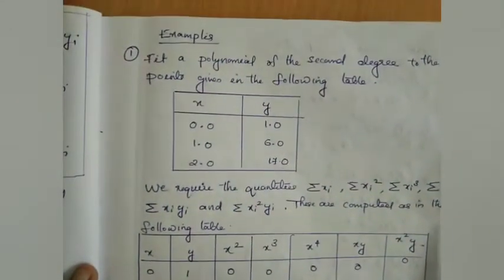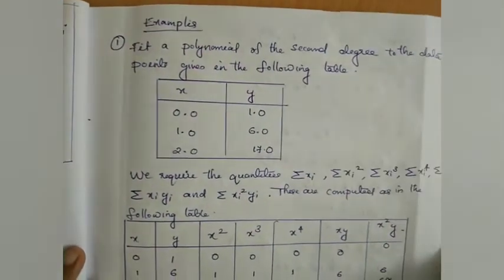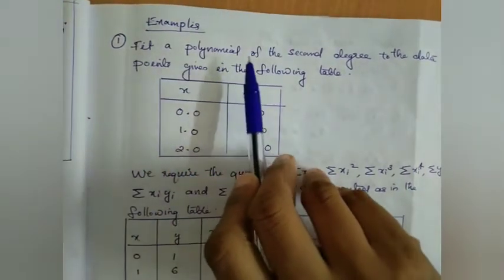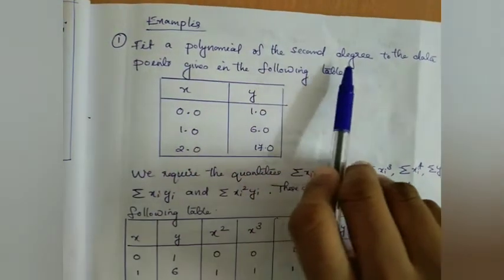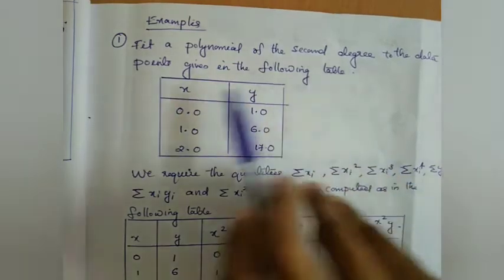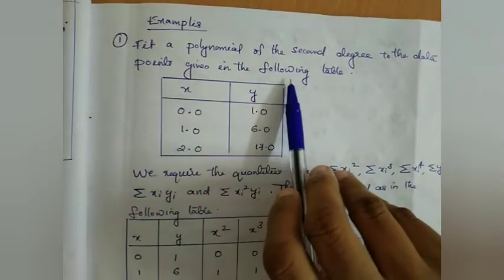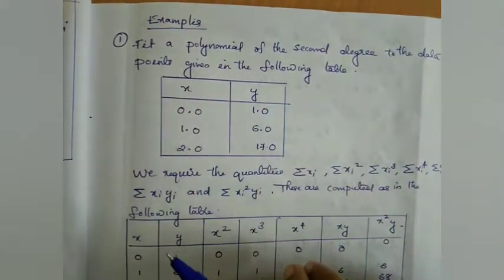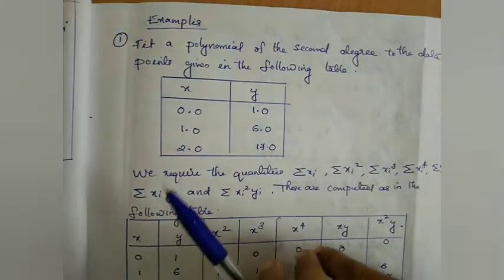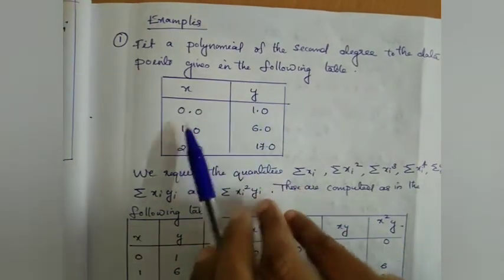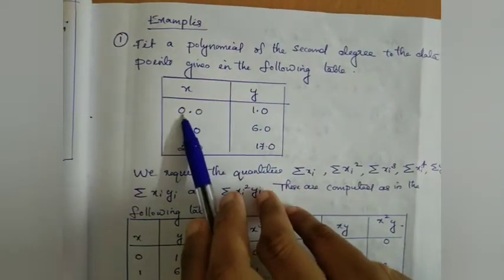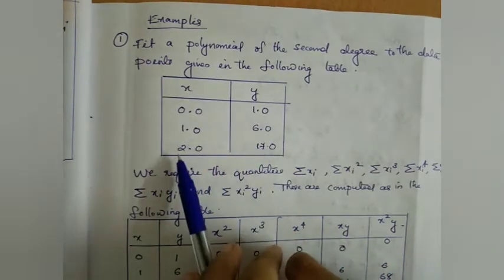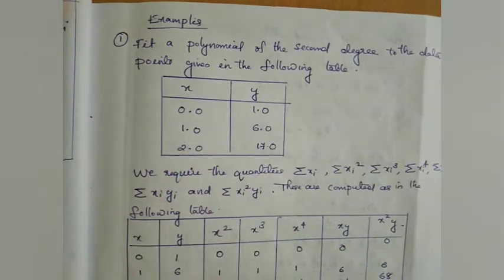Let's take an example. Fit a polynomial of the second degree to the data points given in the following table. The x and y values are: x = 0, 1, 2 and y = 1, 6, 17.